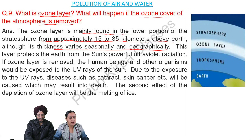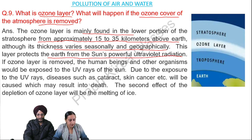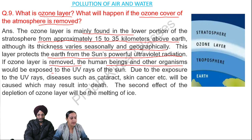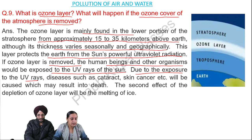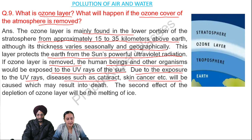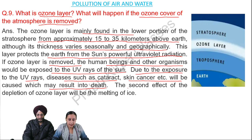This layer protects the earth from the sun's powerful ultraviolet radiation. If the ozone layer is removed, human beings and other organisms would be exposed to the UV rays of the sun. Due to exposure to UV rays, diseases such as cataract, skin cancer, etc. will be caused, which may result in death.